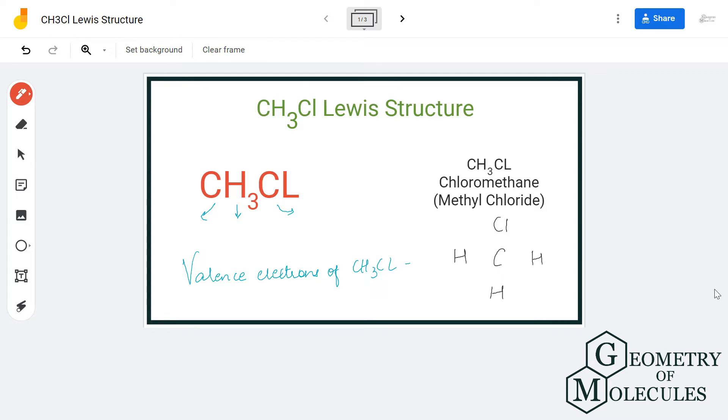These are the electrons that participate in forming bonds and also help us in interpreting the shape of the molecule. Methyl chloride has one atom of carbon, three atoms of hydrogen, and one atom of chlorine.